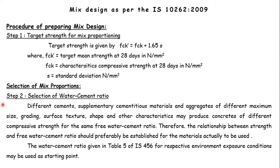Step 2 is selection of water-to-cement ratio. Different cements, supplementary cementitious materials and aggregates of different maximum size, grading, surface structure, shape and other characteristics may produce concrete of different compressive strength for the same free water-cement ratio. Therefore, the relationship between strength and free water-cement ratio should preferably be established for the materials actually to be used. The water-cement ratio given in Table 5 of IS 456-2000 for respective environment exposure conditions may be used as the starting point.